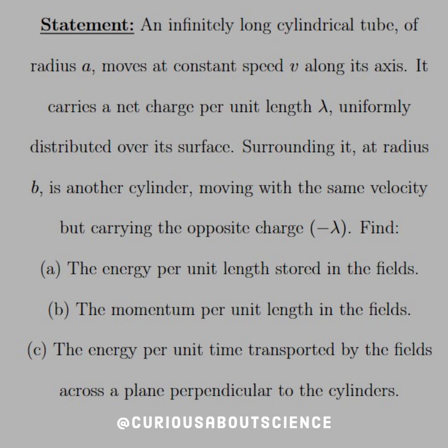So what we have here is an infinitely long cylindrical tube of radius A moves at a constant speed V along its axis. It carries a net charge per unit length lambda, uniformly distributed over its surface. Surrounding it at radius B is another cylinder moving at the same velocity but carrying the opposite charge, negative lambda.